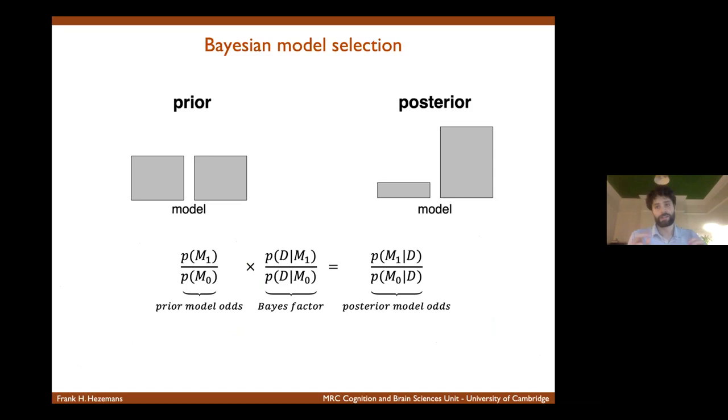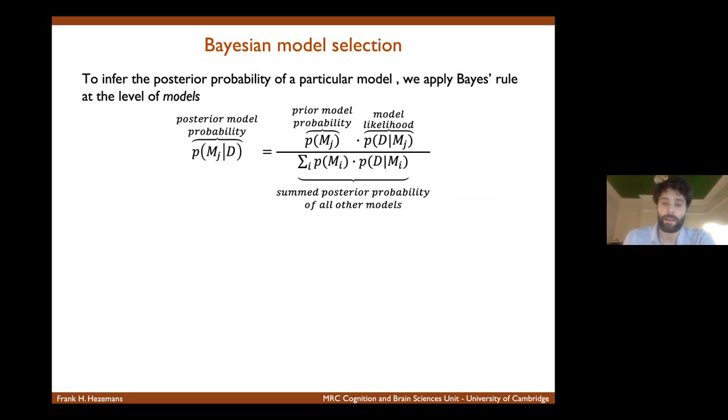So this is just an example with two models, one of which was kind of a trivial null model, but we can scale this up and take into account many different models simultaneously. And this looks a bit complicated, but fundamentally, we're doing the same thing as I showed you before with the regression coefficients. So you compute a model's posterior probability by multiplying the model's prior probability by the model's likelihood with some denominator term.